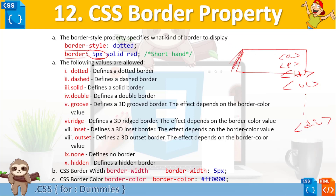The bigger the number, the thicker the border; the smaller the number, the thinner it is. The solid value indicates the style of the border. This is what we call the shorthand style — in one line you specify all three attributes used for the border. Typically for a border you need three properties: width, style, and color.